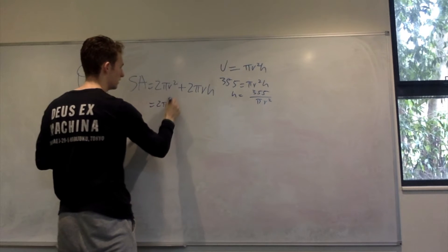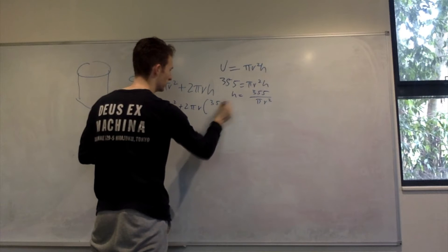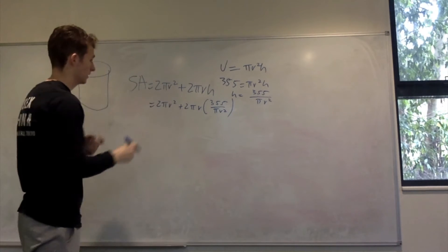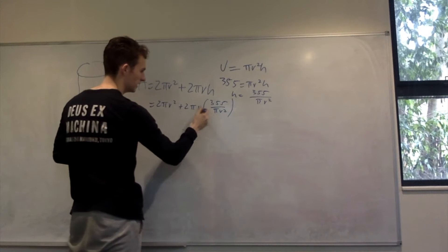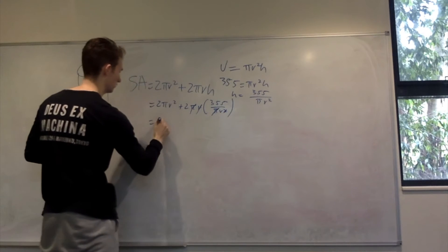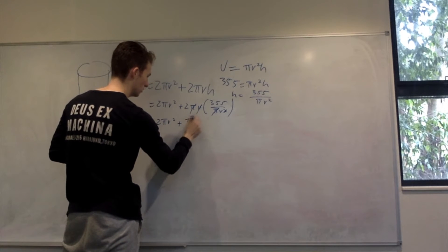S = 2πr² + 2πr(355/πr²). Let's do a bit of rearranging here. That square goes, that π goes. S = 2πr² + 710/r.